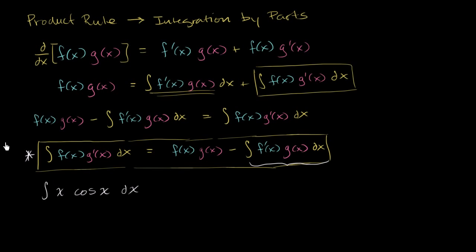So in this case, if we assign f(x) to be equal to x, f'(x) is definitely simpler. f'(x) is equal to 1. If we assign g'(x) to be cosine of x, once again, if we take its antiderivative, that's sine of x. It's not any more complicated.